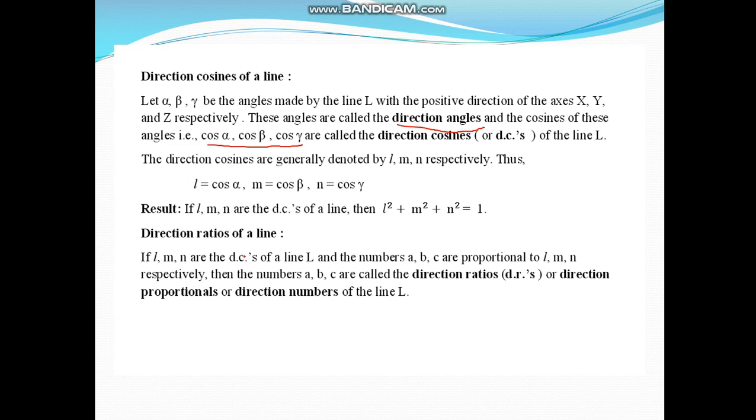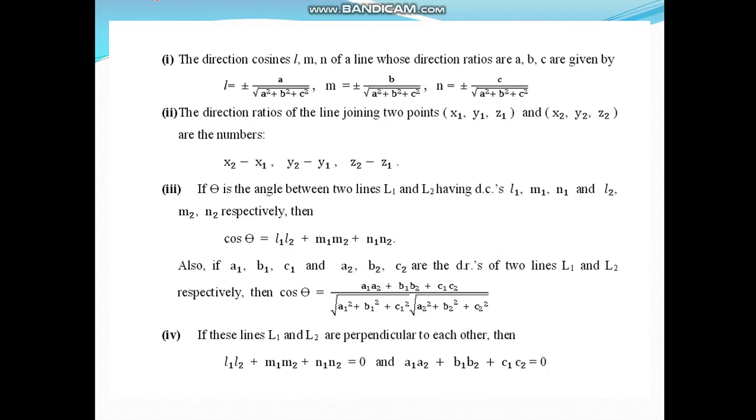Next is direction ratio. If l, m, n are the direction cosines and the numbers a, b, c are proportional to l, m, n, then these three numbers are called direction ratios. Here is the relation between direction cosines and direction ratios.